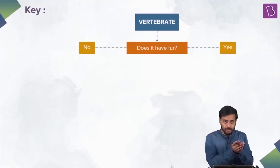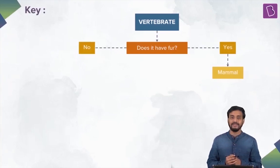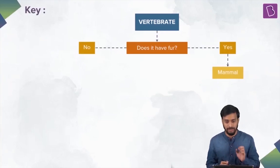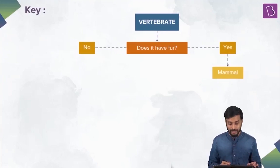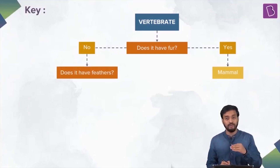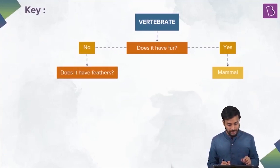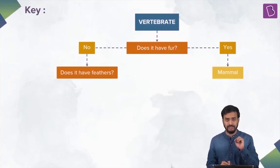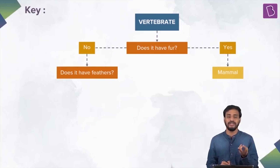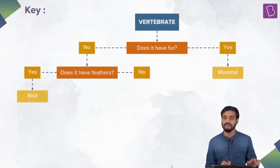Yes or no. Now, if it is yes, that means it's a mammal. But if it is no, then you have to move on to the next question. What is the next question? Does it have feathers? The answer is again two: yes or no, opposites.